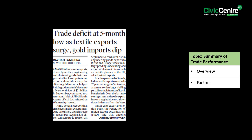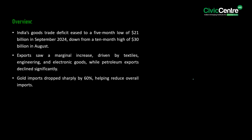The next article says that a marginal increase in exports driven by textiles, engineering, and electronic goods — which compensated for lower petroleum exports — alongside a sharp decline in gold imports helped India's goods trade deficit ease to a 5-month low of $21 billion in September, compared to a 10-month high of $30 billion in August, according to official data. Gold imports dropped sharply by 60%, helping reduce overall imports.